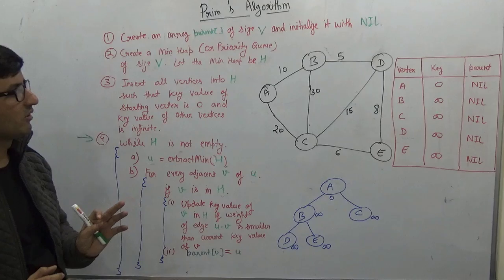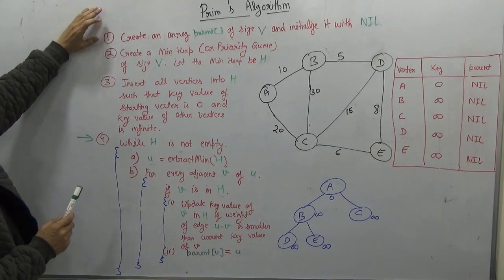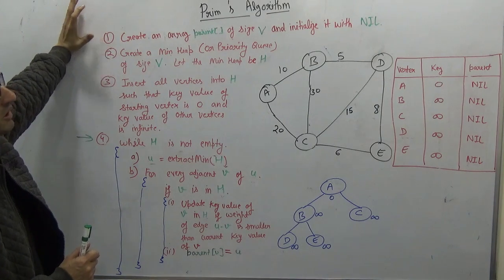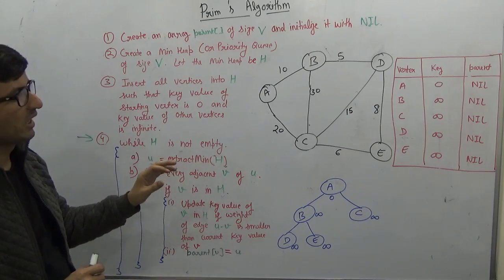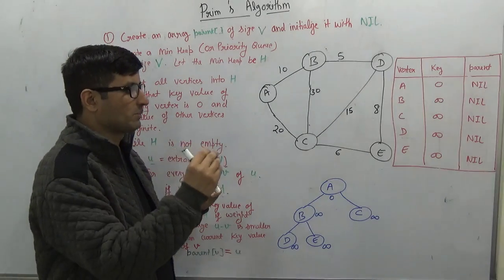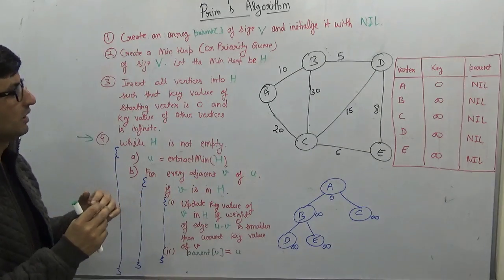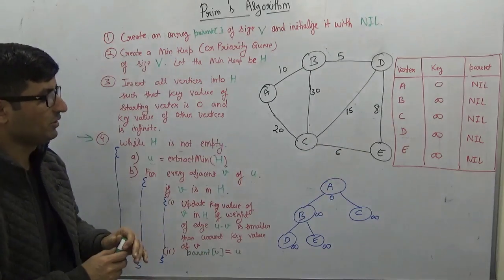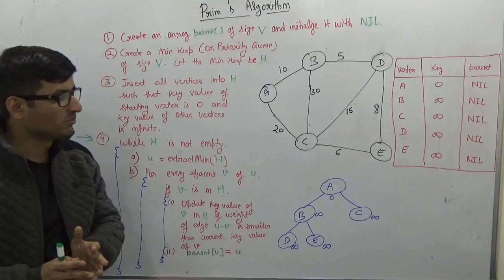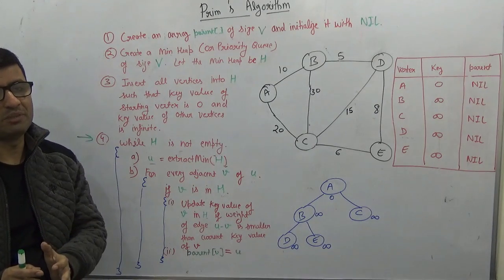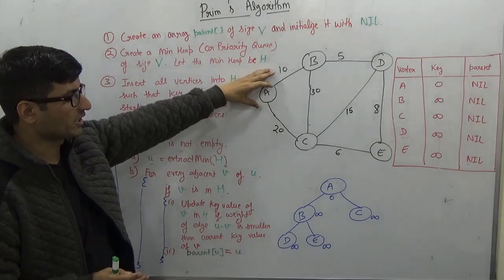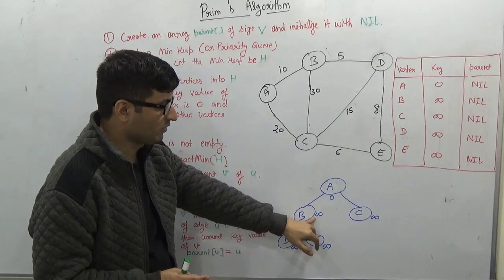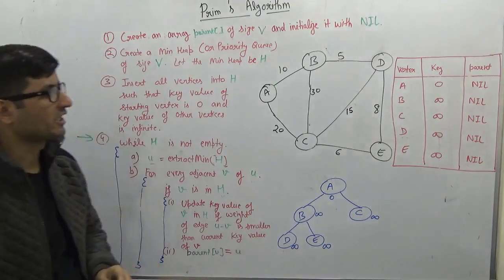Let's take a look at the complete algorithm. We create an array called parent, which is used to represent our output — the minimum spanning tree. We represent the output as a parent array, where every vertex has its parent stored. Then we create a min-heap of size V. We always start Prim's algorithm from some starting vertex — here we take vertex A. We assign key value 0 to it and infinite to all other vertices.